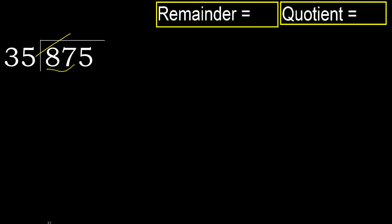35 multiplied by 3 is 105, which is greater. Multiply by 2: 70 is not greater. Subtract: 87 minus 70 is 17. Next.